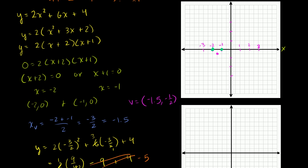We can graph the vertex right there. And if we want the y-intercept: when x is 0, y is equal to 4, since the other terms cancel out. The y-intercept is at 0, 4 — right over there. And then we can graph this parabola, which should be symmetric around the x-coordinate of the vertex.